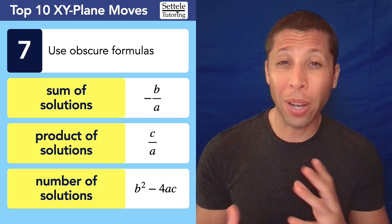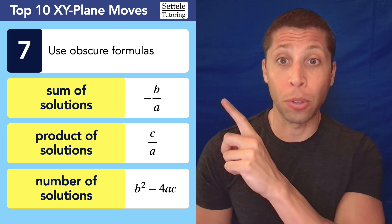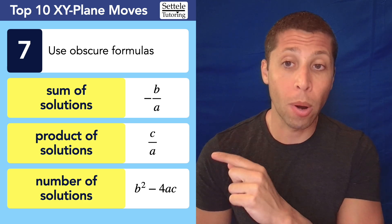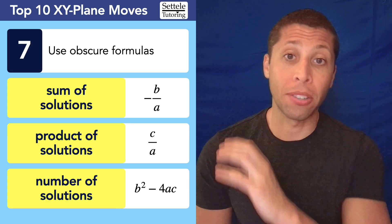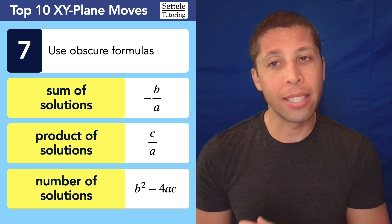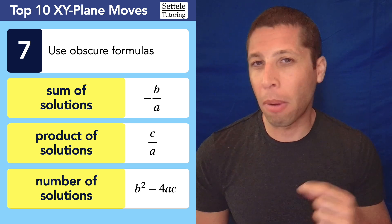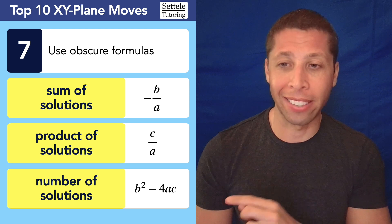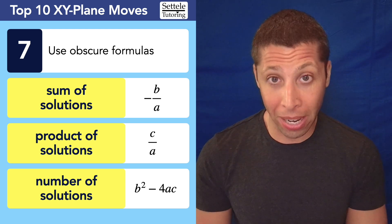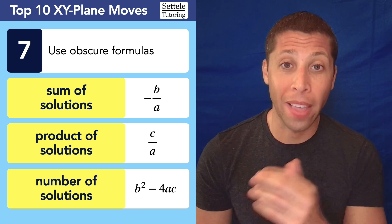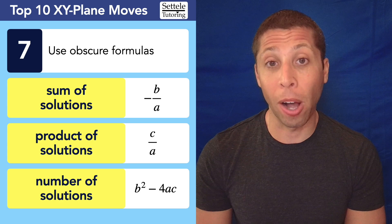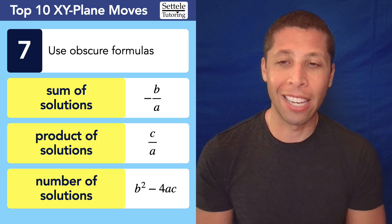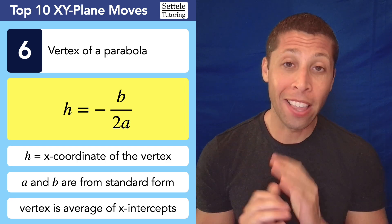Number 7: obscure formulas. If they talk about the sum of solutions for a quadratic, I'll write negative b over a. If they talk about the product of solutions, I'll write c over a. To be honest those two are pretty obscure and you can often solve another way. But the discriminant — b squared minus 4ac — you're going to see it on every single SAT. The number of solutions for a quadratic is given by the discriminant, and moving into that formula is often what solves the question.